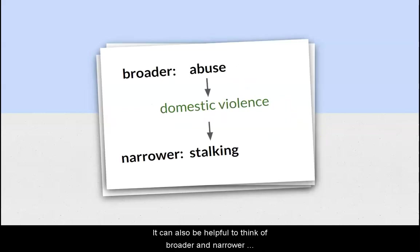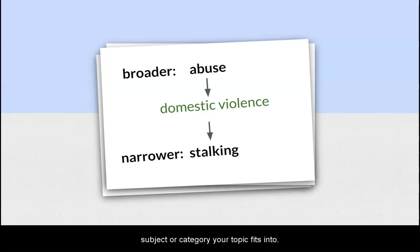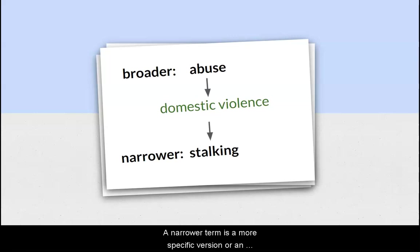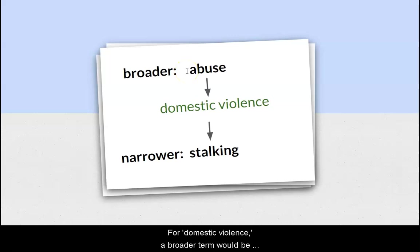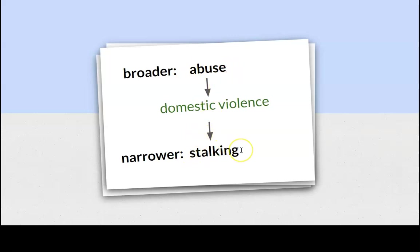It can also be helpful to think of broader and narrower terms related to your topic. A broader term is the wider subject or category your topic fits into. A narrower term is a more specific version or an example of the idea you're looking for. For domestic violence, a broader term would be abuse and a narrower term would be stalking.